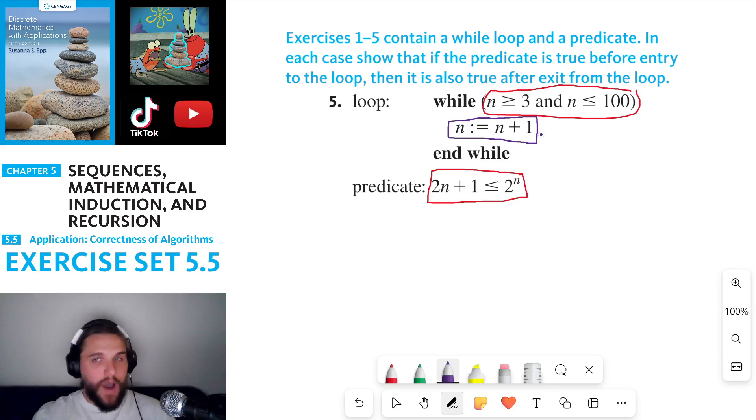Now, the only reason why the condition of this while loop would not be satisfied is if n increases too much. n is never going to decrease, so we're never going to have to be concerned about this condition being violated, that n is greater than or equal to 3, because n is always going to be greater than or equal to 3, since n is being incremented by 1 and n is increasing. So that means the only way we can fail this while loop condition is if n is greater than 100.